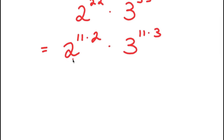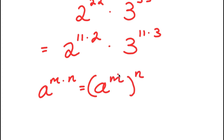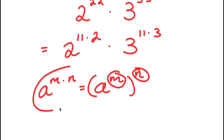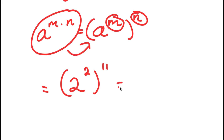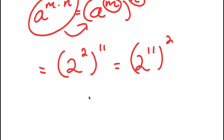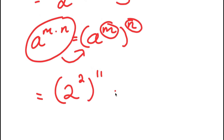There is an important property of exponents I'm going to use here. If I have something in the form a to the power of m times n, this is equal to a to the power of m to the power of n — these two exponents simply multiply and result in a to the power of m times n. So 2 to the power of 11 times 2, I'm going to rewrite that as 2 to the power of 2 to the power of 11. This is also the same as 2 to the power of 11 to the power of 2, since both equal 2 to the power of 2 times 11. So I'm going to rewrite this as 2 to the power of 2 to the power of 11 times 3 to the power of 3 to the power of 11.